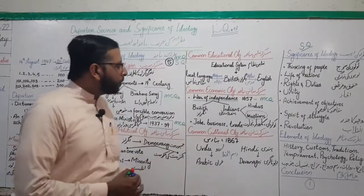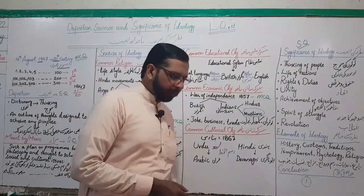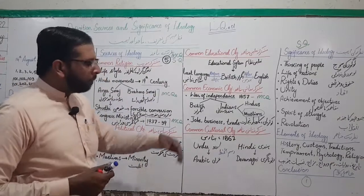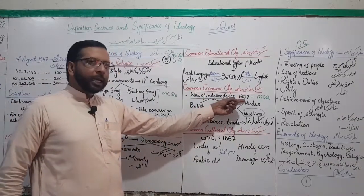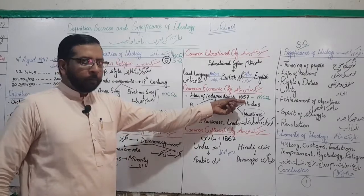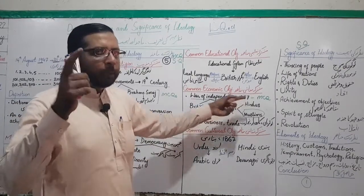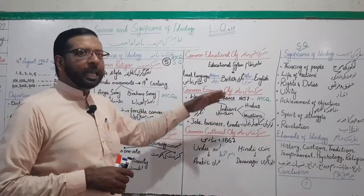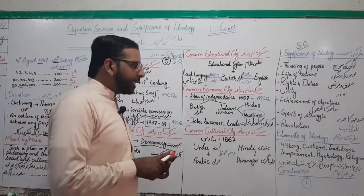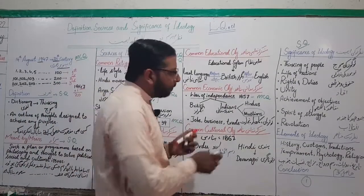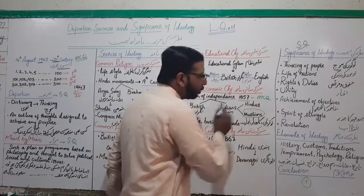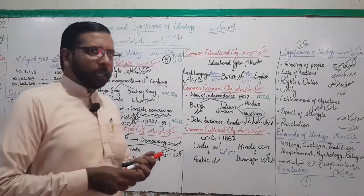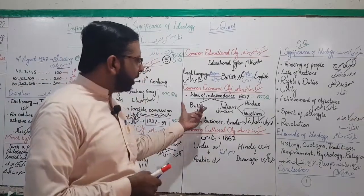Agla point: common economic objectives. Sabse pehle ek important date — 1857. Aapke minds mein click kar gaya hoga: subcontinent mein ek bada important incident hua tha 1857 mein — War of Independence, jise hum jang-e-azadi kehte hain. Important MCQ — mark kar lijiye, board mein aa bhi chuka hai. Yeh jang British aur Indians ke darmiyan ladi gayi thi.